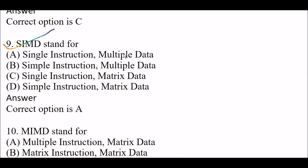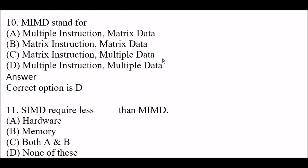Next question: SIMD stands for — option A, single instruction, multiple data; option B, simple instructions, multiple data; option C, single instructions, matrix data; option D, simple instructions, matrix data. The right answer is option A, single instruction, multiple data. This is a very important question, please focus on it.